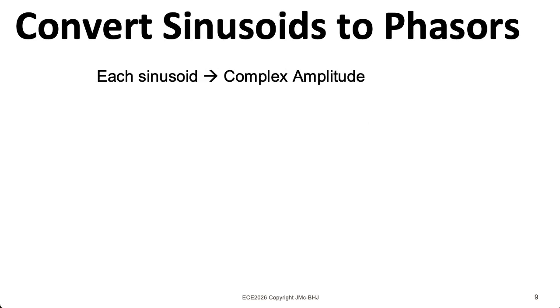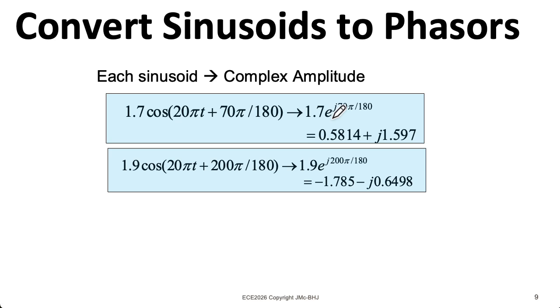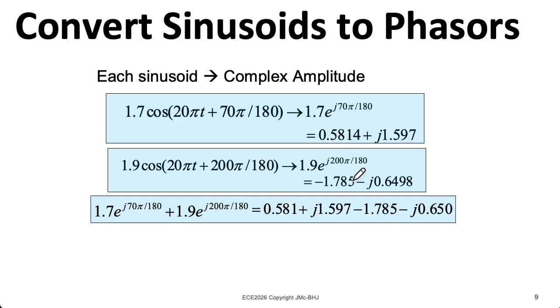So for the first cosine, we can write down the appropriate phasor representation. And again, this phasor alone is not the complete sinusoid. You would need to multiply this by e^(j20πt) and then take the real part to actually get this expression exactly. But we'll take this representation in terms of this phasor and convert it from polar form to rectangular form. And then we do the same thing for the second sinusoid.